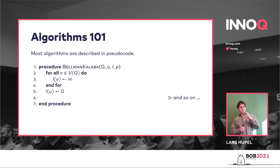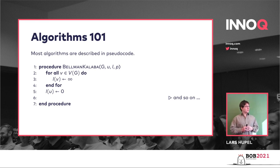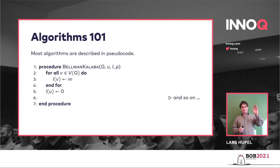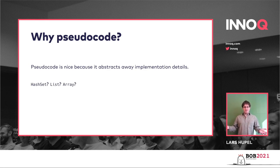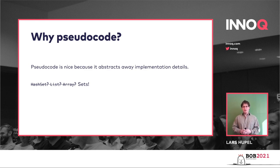Here's an algorithm example from a LaTeX package — some kind of algorithm on graphs. G is a graph, V(G) would be all the nodes in that graph. We say something like: for all vertices in this graph, do something. We don't need to define here if this is a map function, for-each, or a for-loop — we just say for all nodes, do that stuff. The nice thing is that when defining the algorithm, we don't need to care about implementation details like whether this is a hash set, a list, or an array. It's just sets.